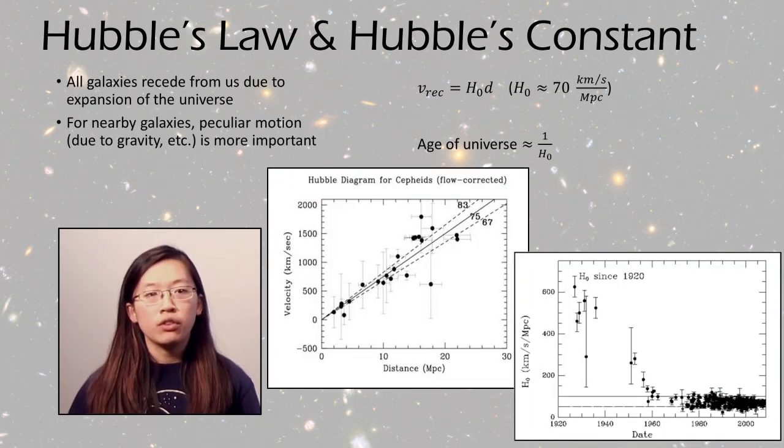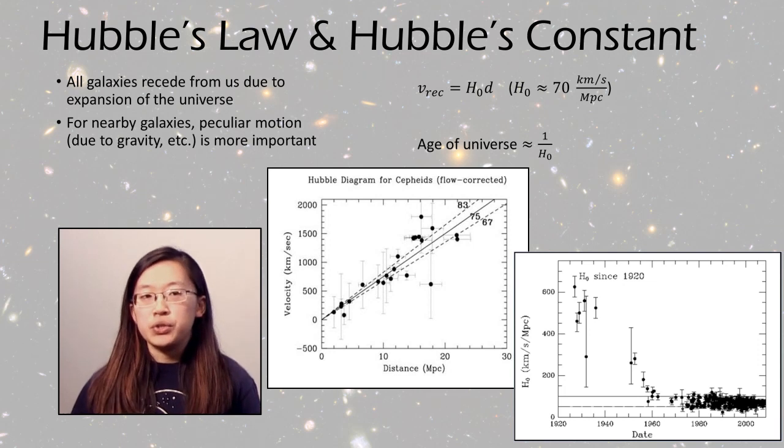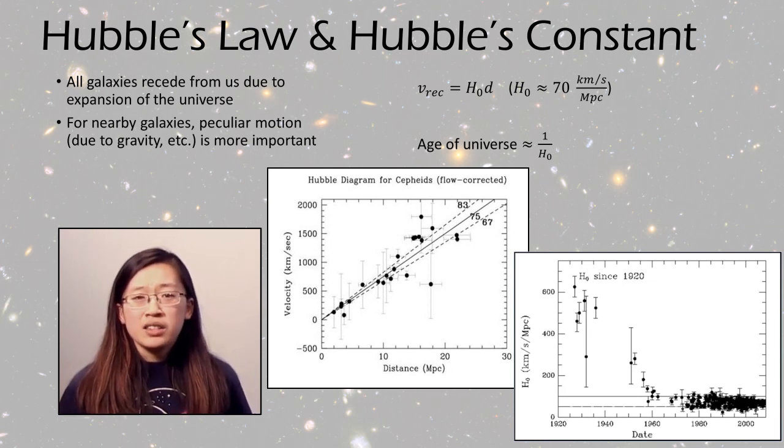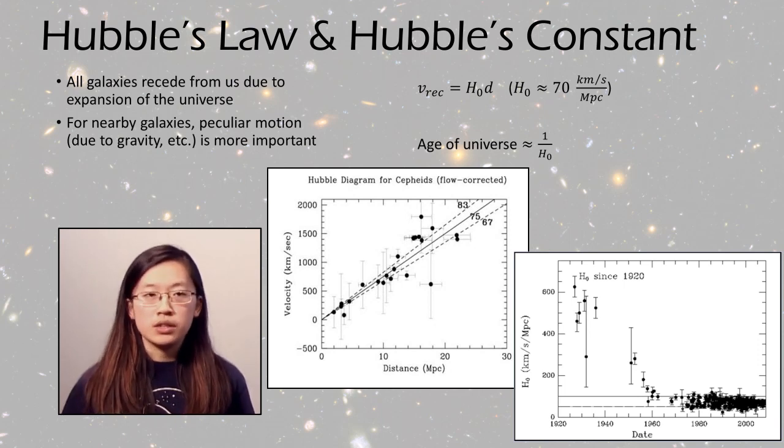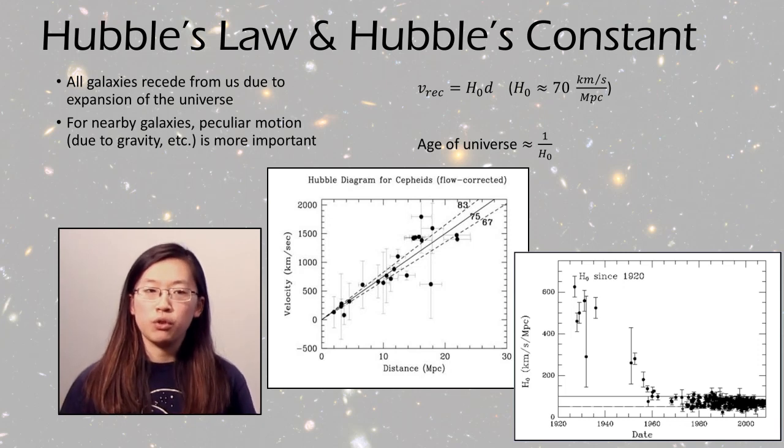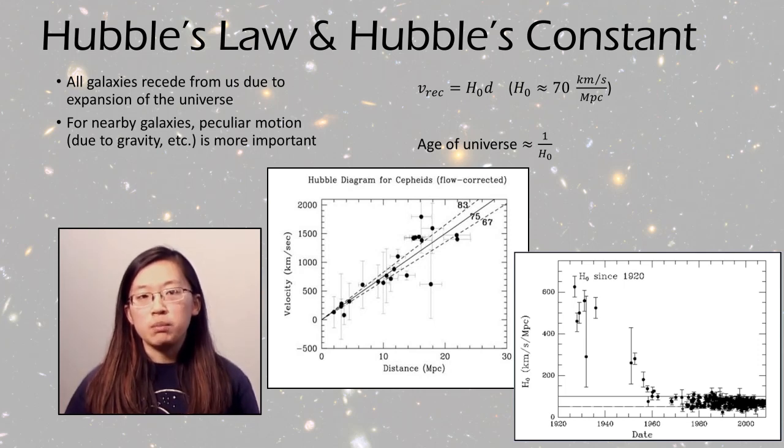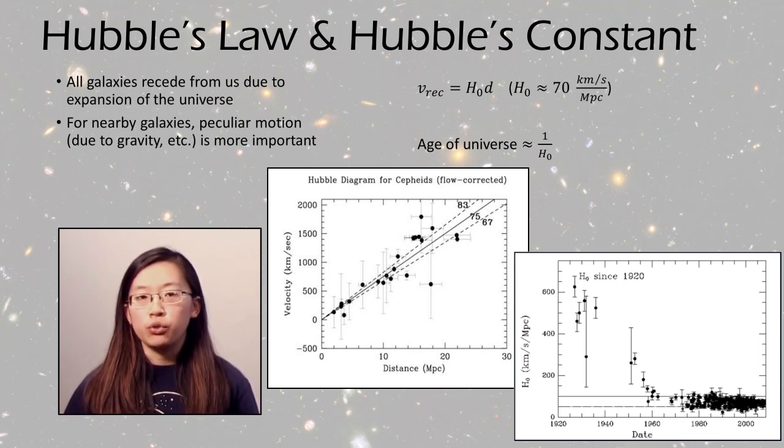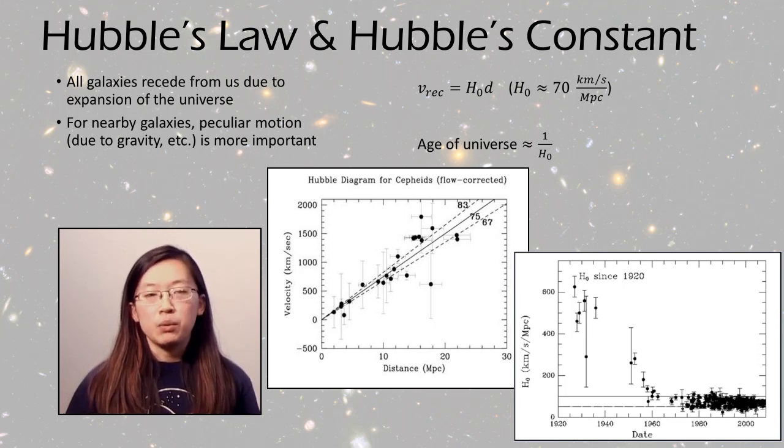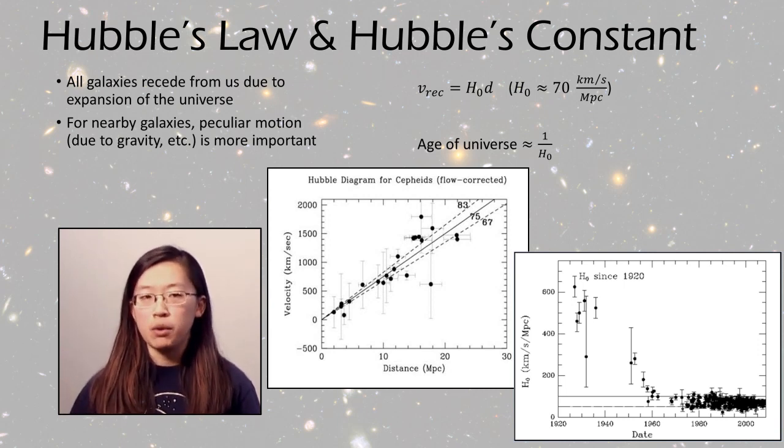Last on the math topic, there's Hubble's law and Hubble's constant. So all galaxies are receding from us due to the expansion of the universe. For nearby galaxies, often this is overpowered by peculiar motion, such as Milky Way and Andromeda are moving towards each other due to their mutual gravity. But as we go out into further galaxies, they will generally be moving away from us due to the Hubble flow. And Hubble's law basically says that this distance is proportional to some constant times that recessional velocity. And the value of Hubble's constant is generally about 70 kilometers per second per megaparsec.